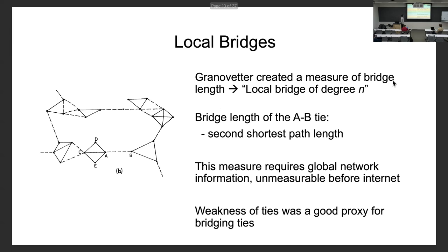He developed this measure of the bridging capacity of the tie — he called it a local bridge of degree N. If this is the focal relationship A and B, this tie is a local bridge of degree — was it 14 or 17? — basically the shortest path to get to B from A if this relationship didn't exist. That's the length or bridging capacity of that tie.